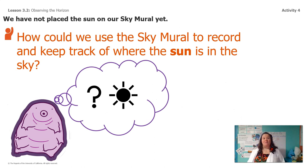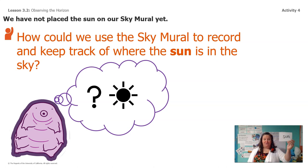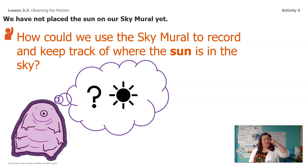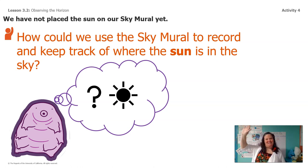You probably noticed that we don't have the sun on our murals yet, right? And that's because that's what we're going to do next time. So here's the question I want to leave you with: how could we use our sky murals to record and keep track of where the sun is in the sky? That's what I want you guys to think about for next time. All right, I'll see you again.